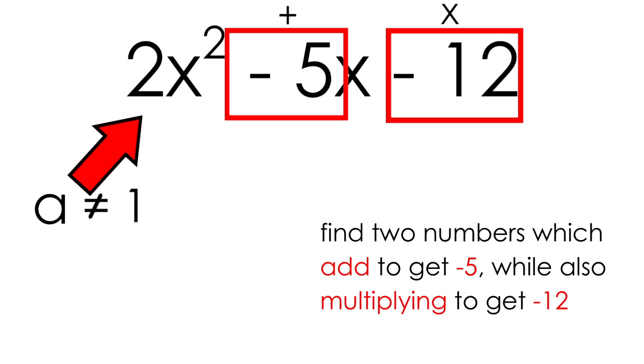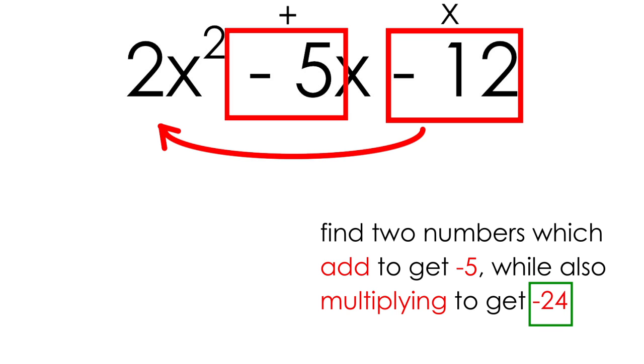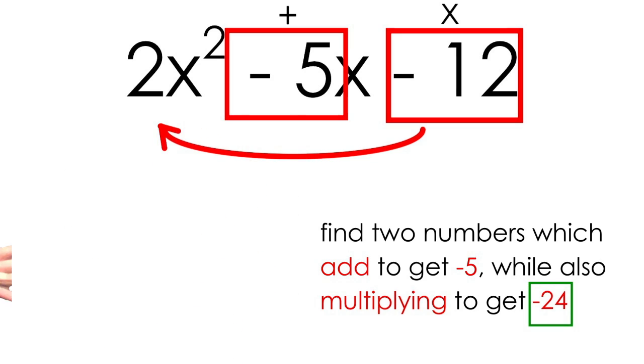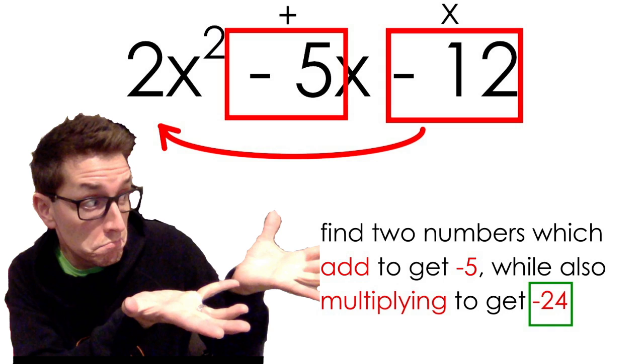Instead, we'll attempt to find two numbers which add to get negative 5, while also multiplying to get negative 12 times 2, our a value, also known as negative 24. Now this is easily the most complex part of this factoring shortcut. So I'm going to show you how I quickly determine the two numbers that will add to get negative 5, while also multiplying to get negative 24.